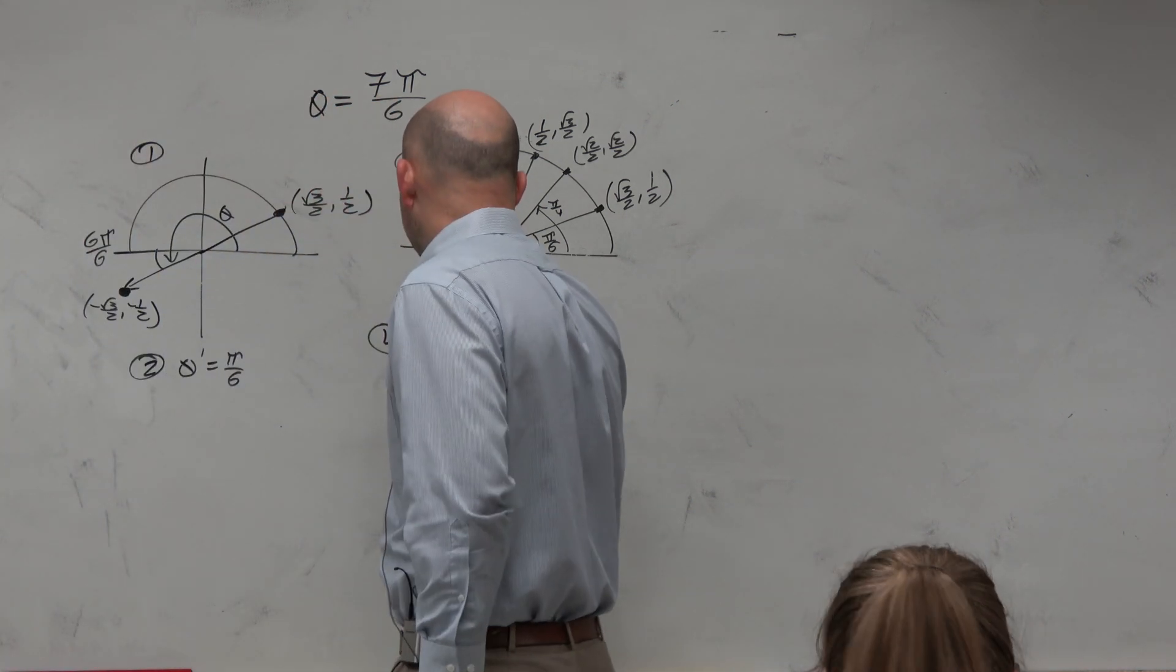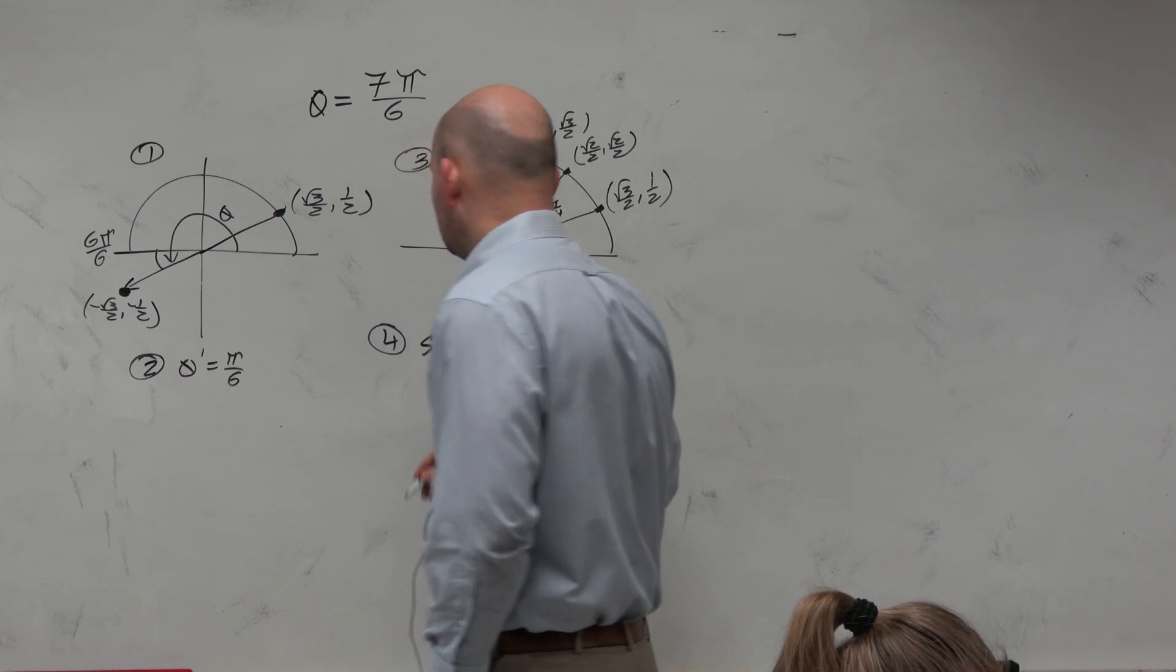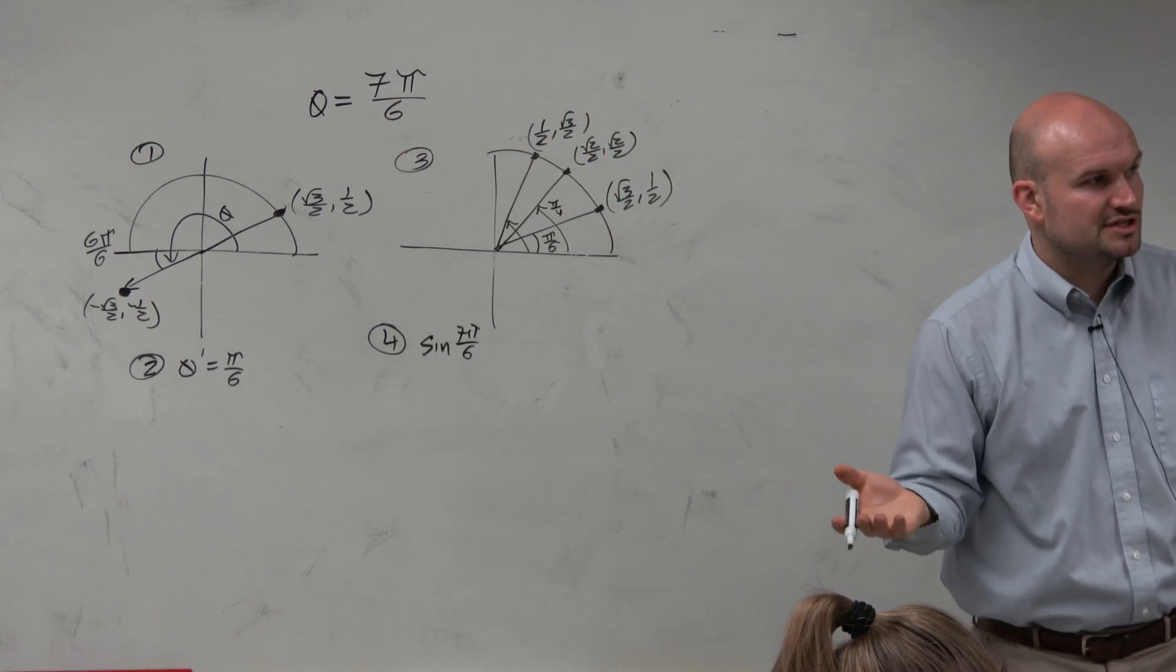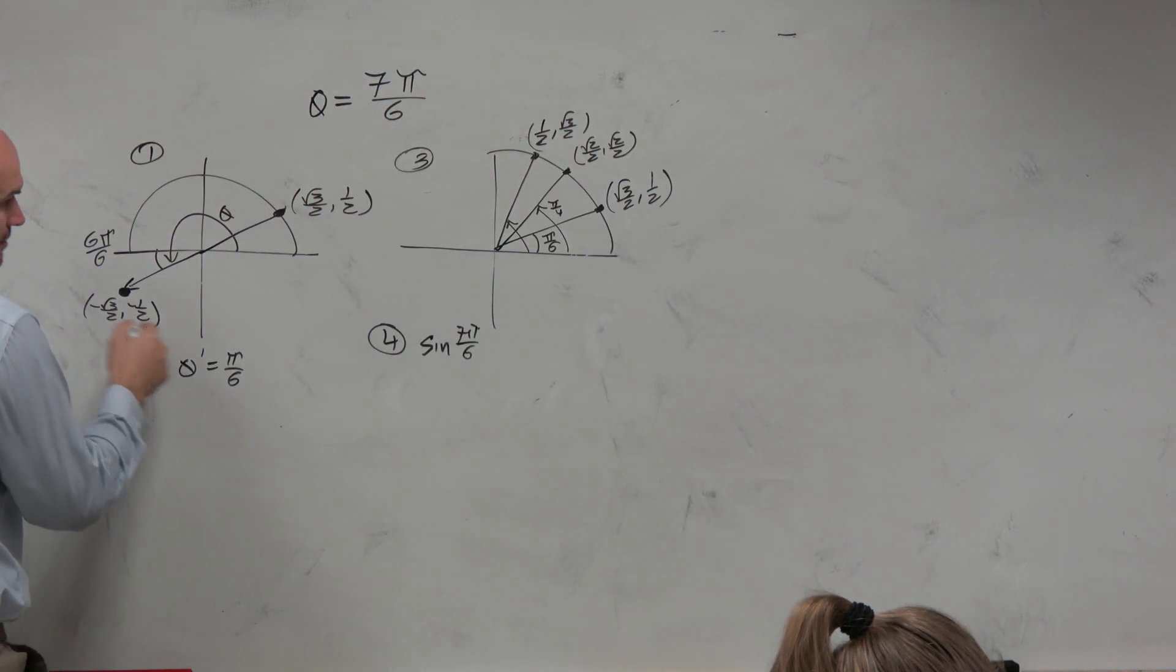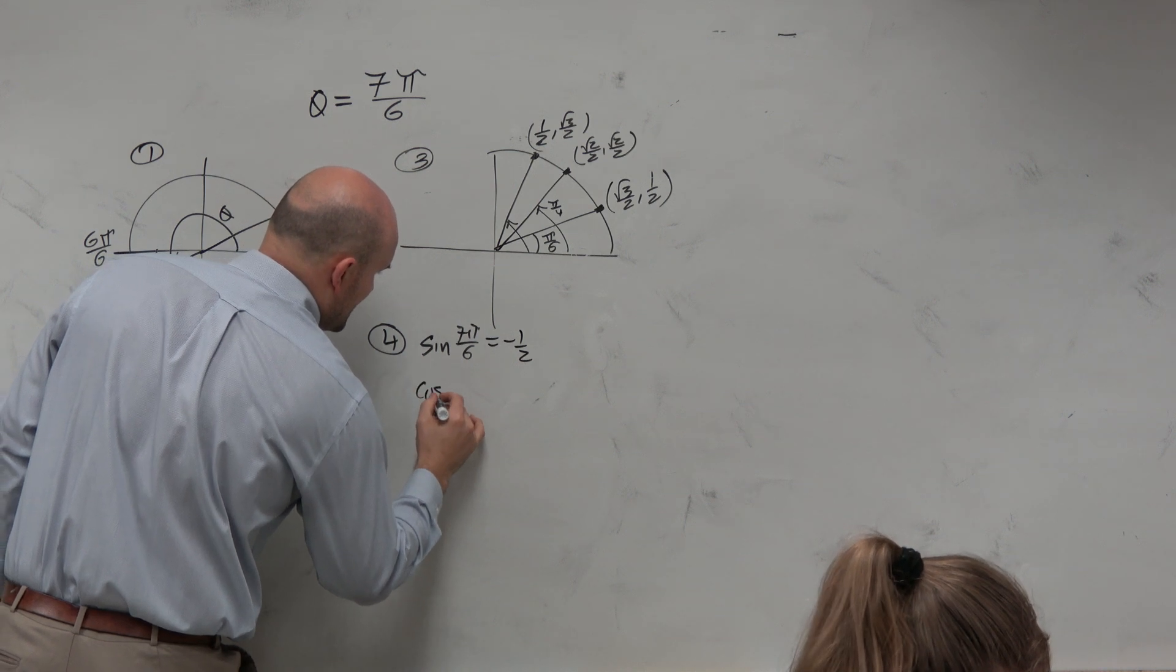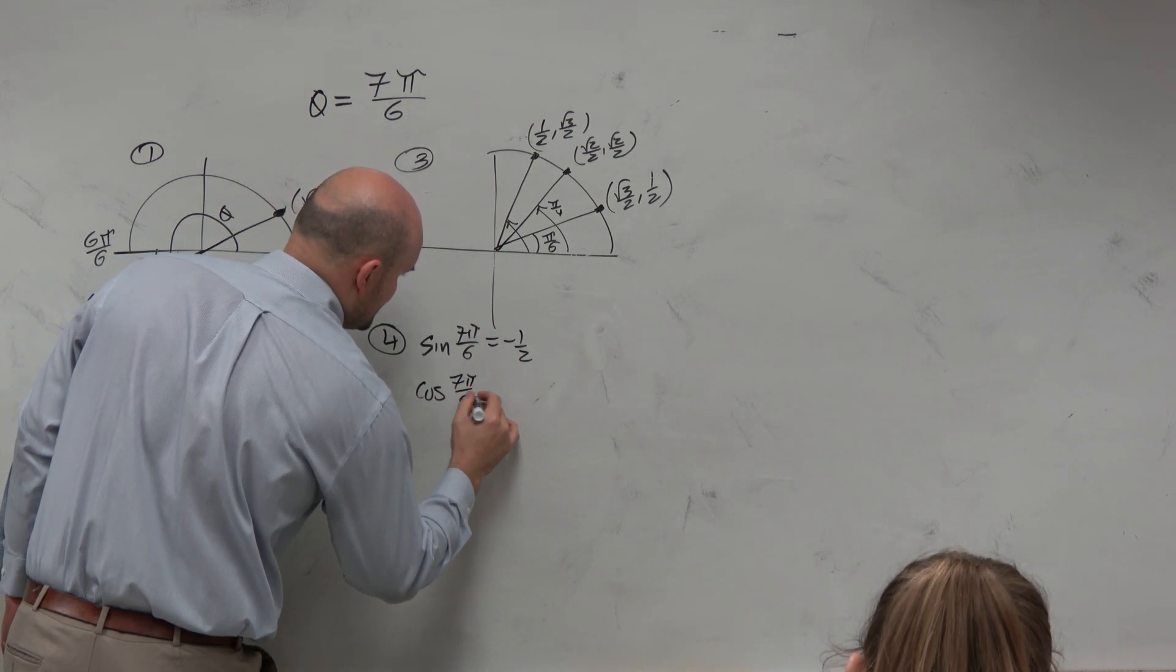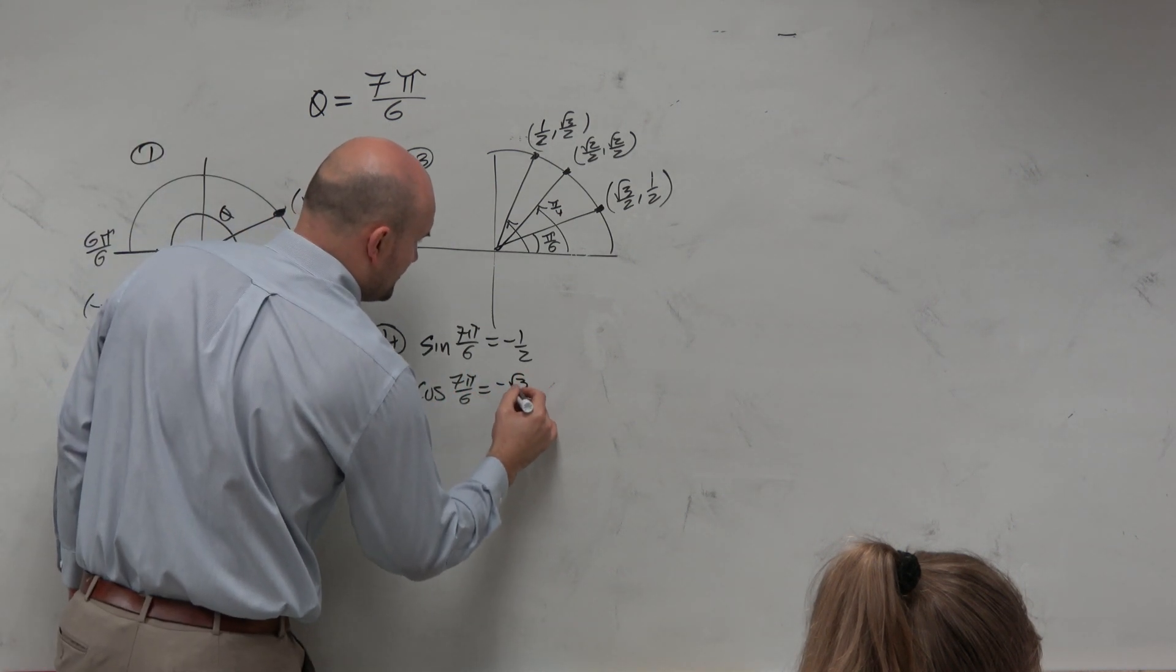So now, if I want to find the sine of 7 pi over 6, that is simply just going to be the y-coordinate, which is equal to negative 1 half. The cosine of 7 pi over 6 is the x-coordinate, which is negative square root of 3 over 2.